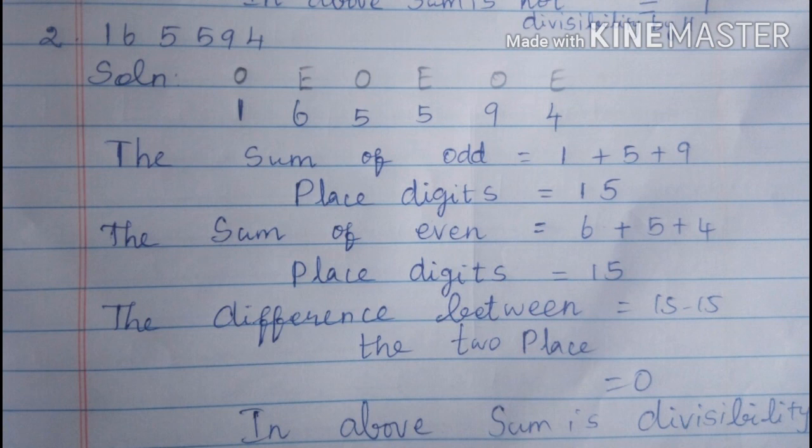Students, do this. Your homework is page number 65: which of the following numbers are divisible by 11? See C and D. Thank you, students.